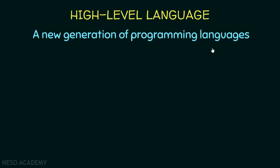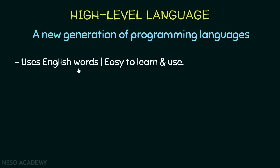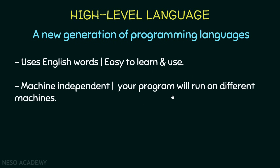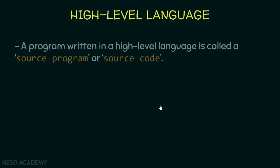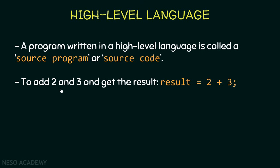Now let's talk about high-level languages. High-level languages are a new generation of programming languages. In a high-level programming language we use English words, which is why they are easy to learn and easy to use. High-level languages are also machine independent, so our program will run on different machines, which is very important. Each instruction written in a high-level programming language is called a statement. A program written using a high-level programming language is called a source program or source code.